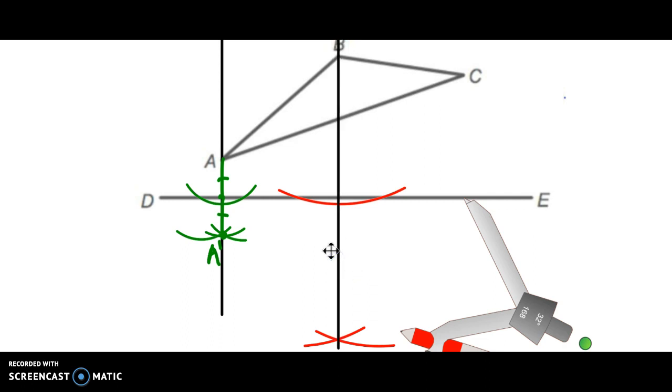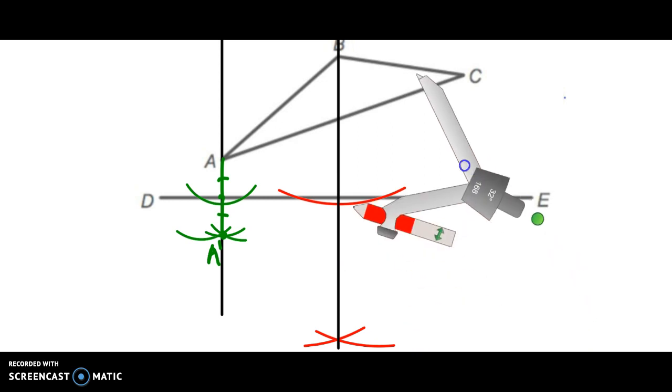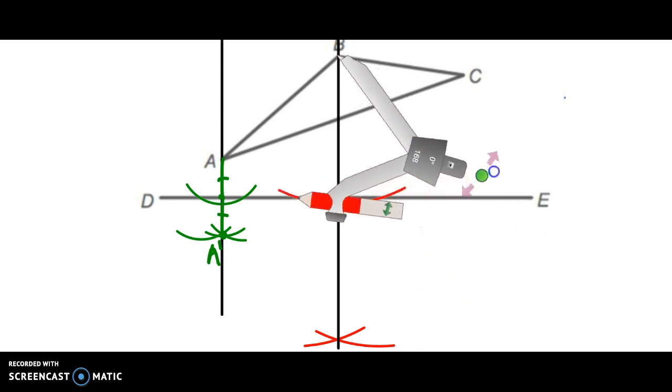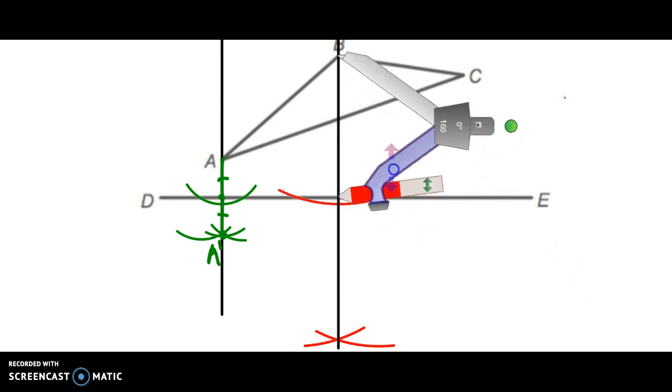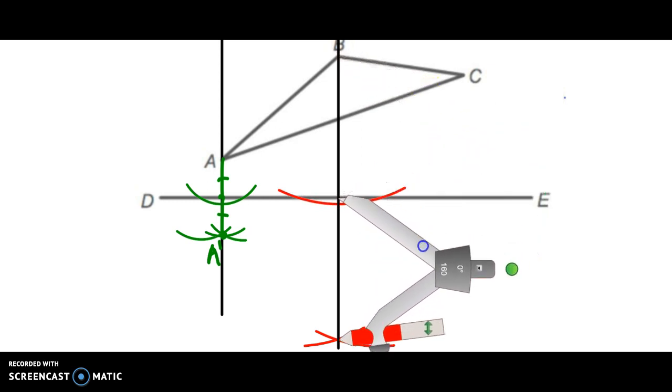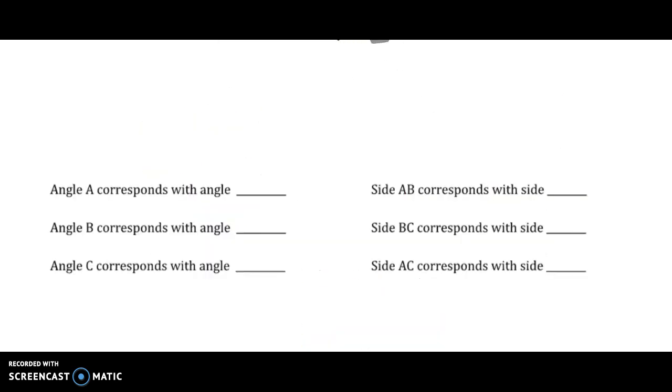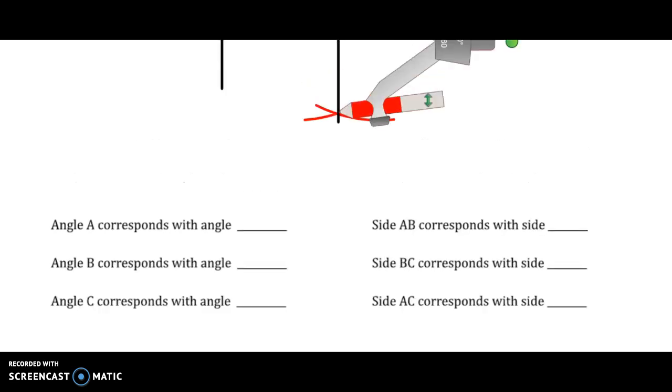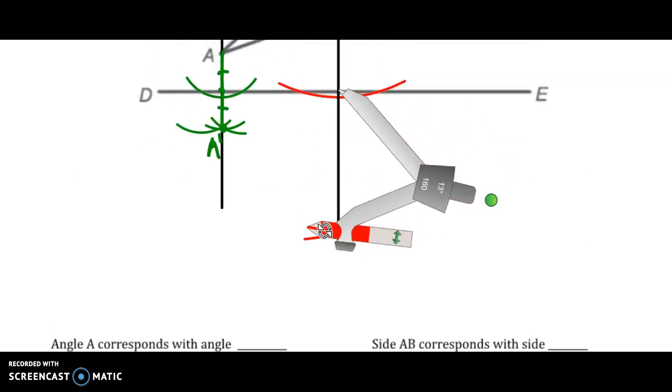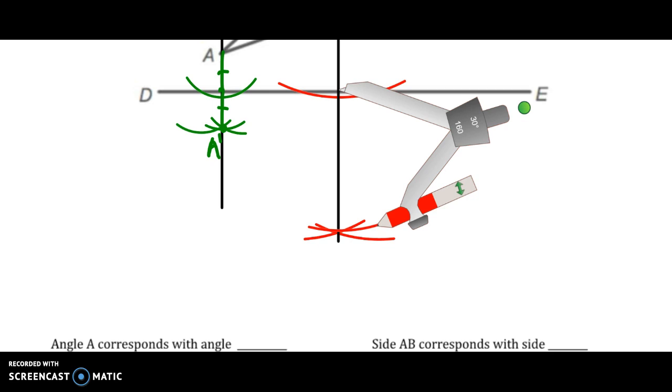So now I have a line perpendicular to DE. And I'm going to measure the distance from B to the line of reflection. And I'm going to measure that same distance from the line of reflection to the other side. And where that measurement is, that is where B prime is going to go.